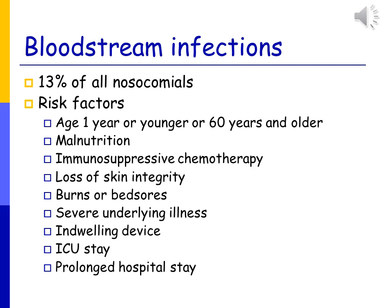Bloodstream infections are 13% of all nosocomial infections. Risk factors include age one year or less or 60 years and older, malnutrition, immunosuppressive chemotherapy, loss of skin integrity such as burns or bed sores, a severe underlying illness, having an indwelling device such as a catheter, being in the ICU, and having a prolonged hospital stay.